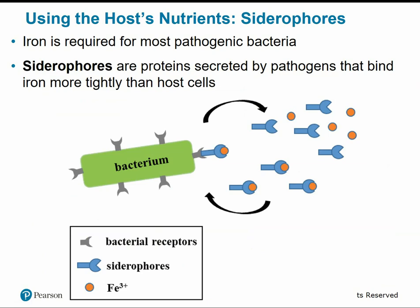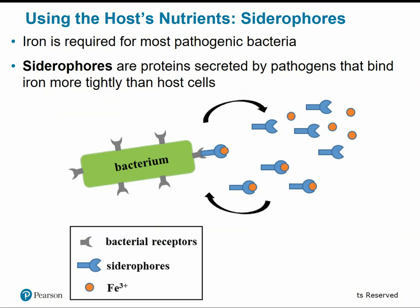Once pathogens have entered the host cell and evaded defenses, they have to cause damage or harm to host cells. One way is by using the host's nutrients. Siderophores are proteins that bind iron more tightly than our host cells — iron is important for most pathogenic bacteria to reproduce, so bacteria use siderophores to get all the iron for themselves before host cells have a chance.